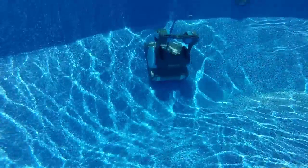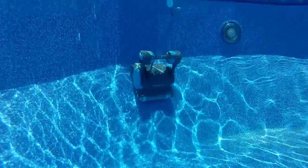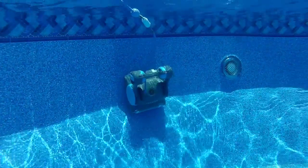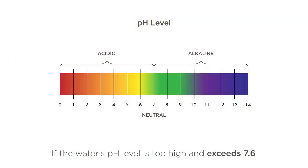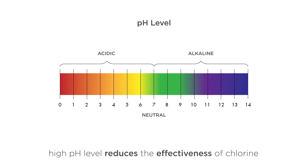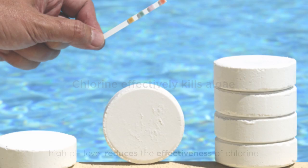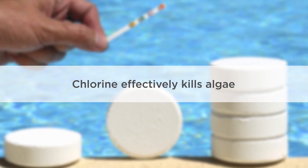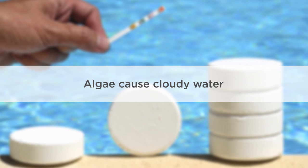Vacuum and brush your pool on a regular basis to keep your water quality high. If the water's pH level is too high and exceeds 7.6, it dramatically reduces the effectiveness of chlorine. Chlorine is the most effective way to kill algae in your pool, and that can cause cloudy water.